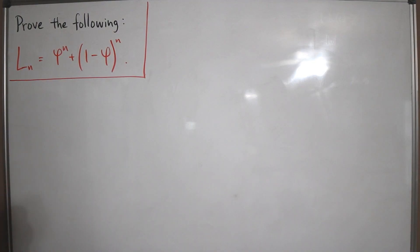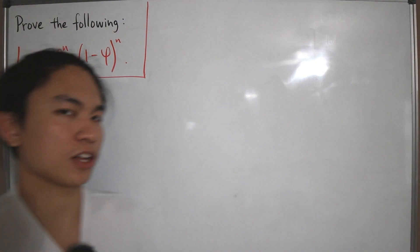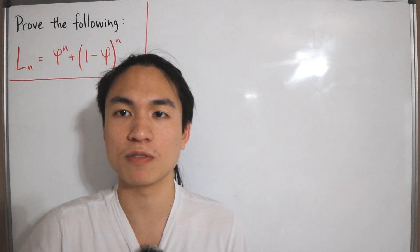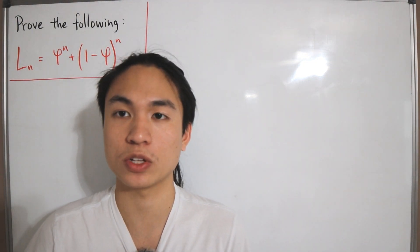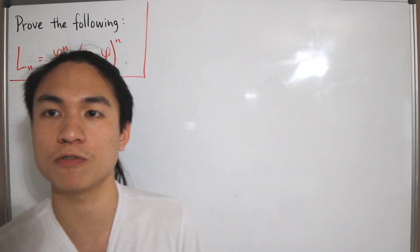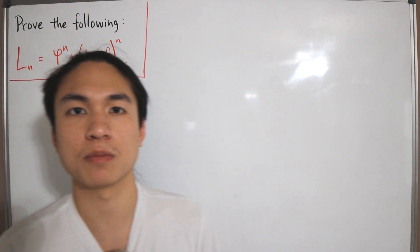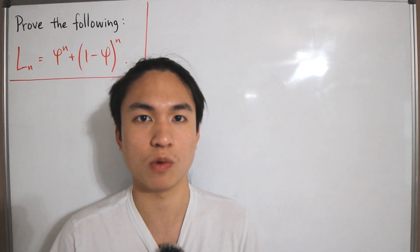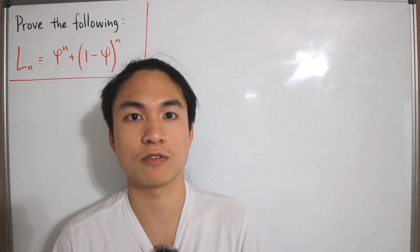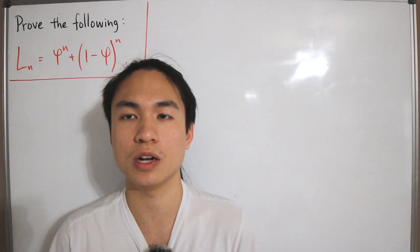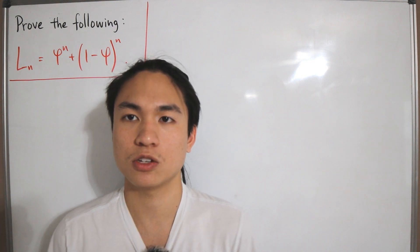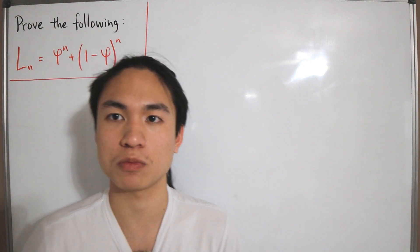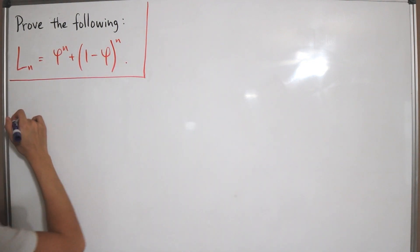Lucas numbers have the same Fibonacci-like behavior: you take a previous term and add it to the current term to build the sequence. However, while Fibonacci numbers start with F_1 = F_2 = 1, Lucas numbers start with L_1 = 1 and L_2 = 3.